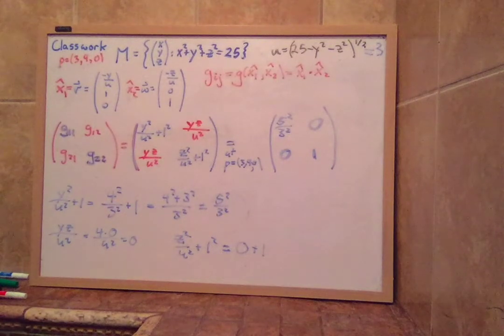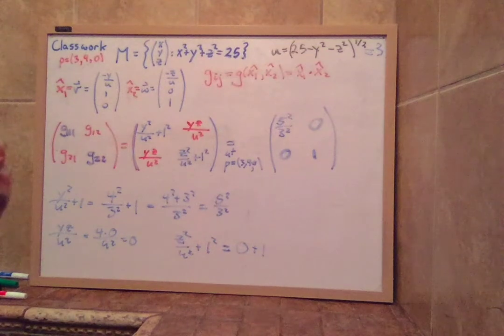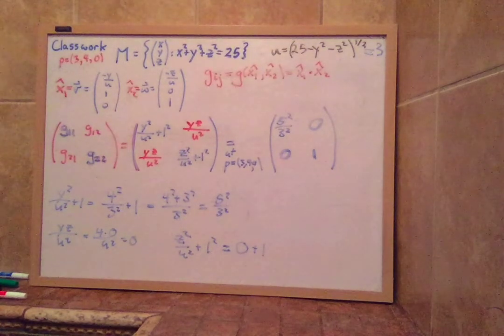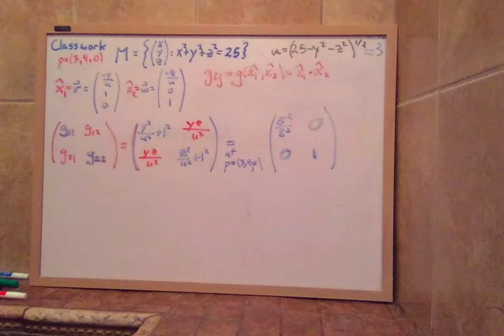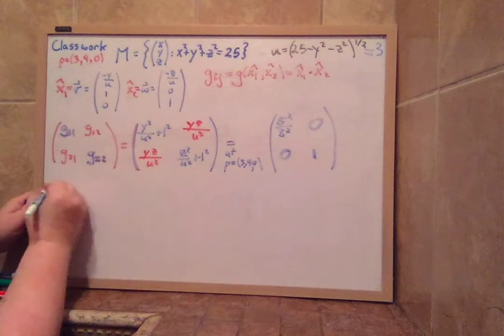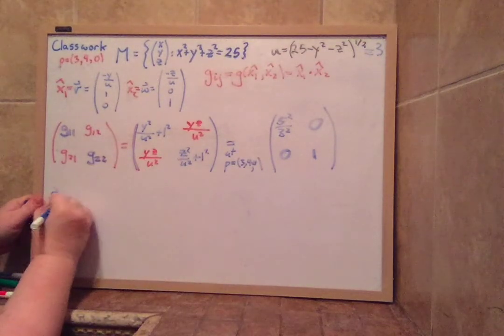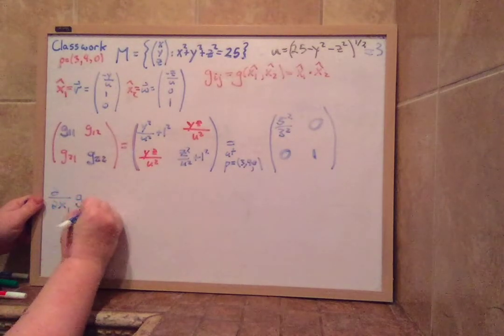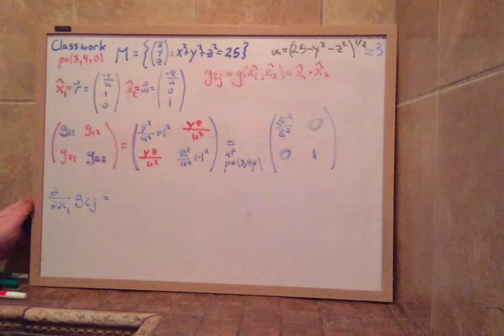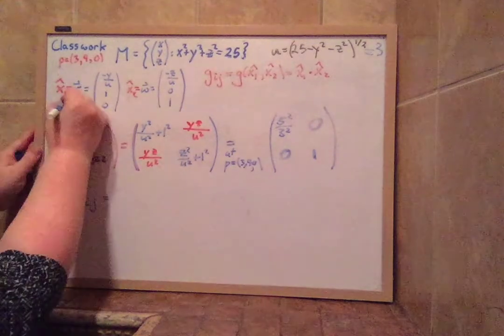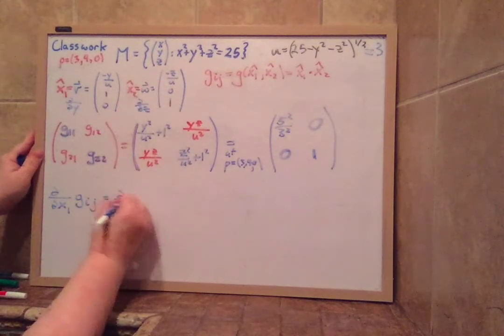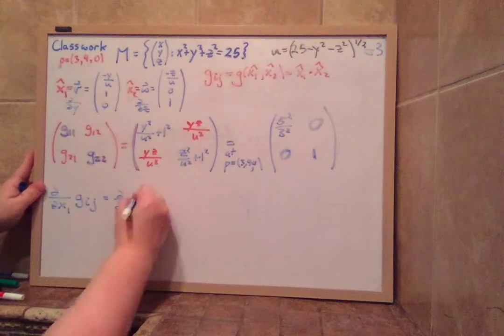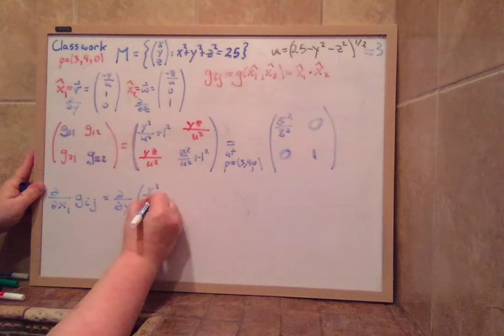And then what we next do is we want to find the various derivatives of this matrix, which means we have to look at this version. And we only need two different derivatives because we only have two dimensions. So this is two-dimensional. We need to know what is the x1 derivative. So our d/dx1 of gij is equal to, what is our first free variable? In this particular case, our first free variable is differentiating in the y direction. And the second one is differentiating in the z direction. So this is d/dy of our gij. So we have four entries: y squared over u squared plus 1, yz over u squared, yz over u squared, and z squared plus u squared over u squared.